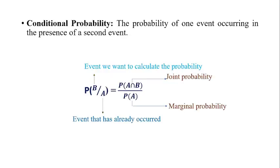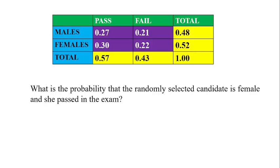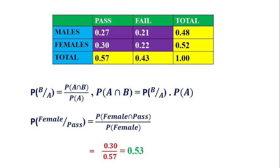Next is conditional probability. The probability of one event occurring in the presence of a second event is called the conditional probability. It is given by the formula: P of B given A equals P of A intersection B divided by P of A. B is the event we want to calculate the probability and A is the event that has already occurred. P of A intersection B is the joint probability and P of A is the marginal probability. Let us calculate what is the probability that the randomly selected candidate is female and she passed in the exam. Using the formula, we get 0.30 divided by 0.57, which is equal to 0.53.